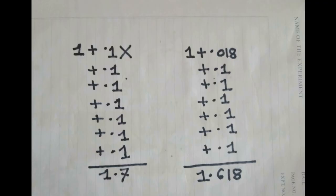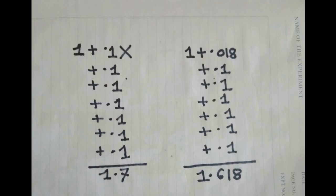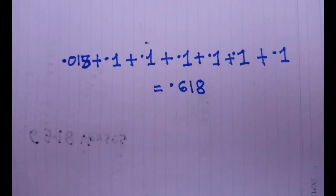Now let us see the mathematical form of Surah Fatiha. If we place 0.018 in place of the decimal 0.1, the sum becomes 1.618, which is the golden ratio. So the mathematical value of Surah Fatiha is 1.618. The mathematical value of the 7 verses of Surah Fatiha is 0.618.